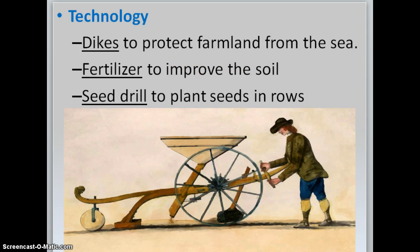There was new technology with the Agrarian Revolution. First, they built dikes to protect the farmland from the seas. Dikes were basically large ditches — if the sea rose due to a storm, the dikes would fill up with salt water so it would not get into the farmland. If you put salt water on farmland, you will not be able to use it for farming — it kills the soil.